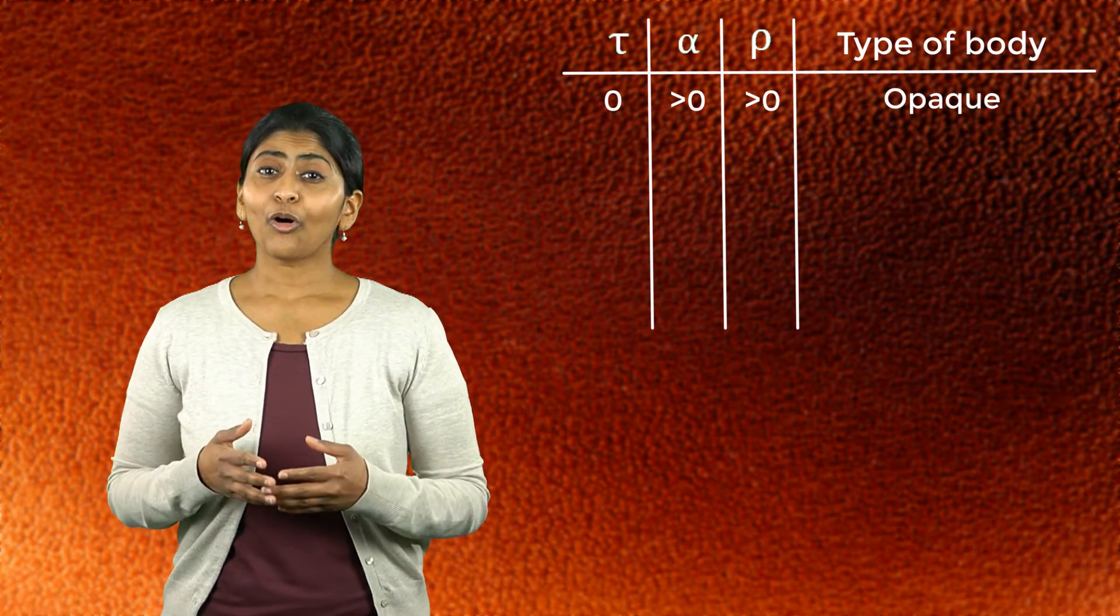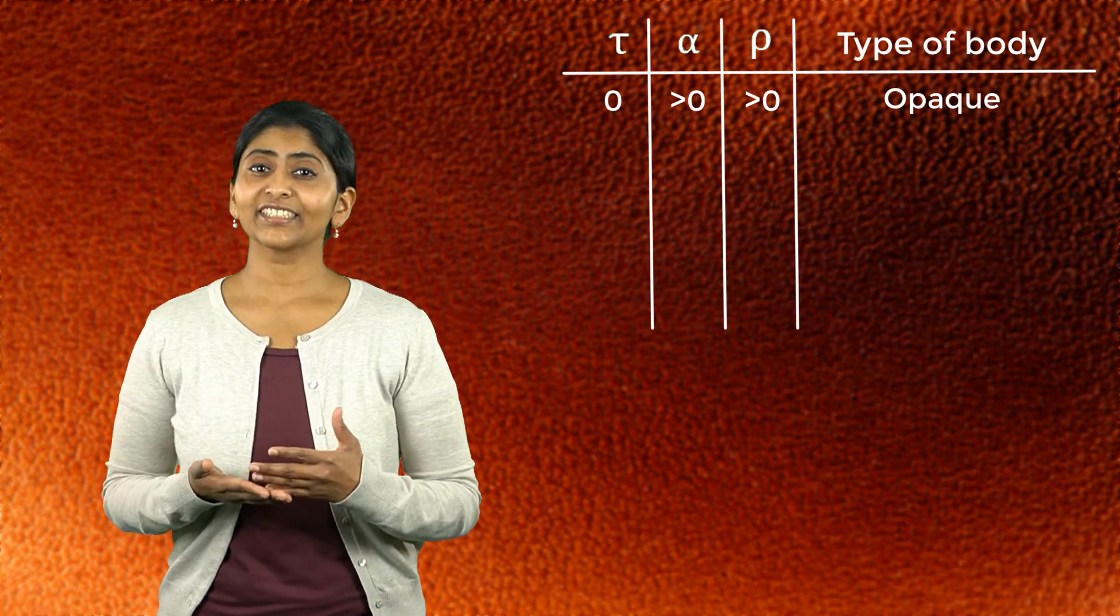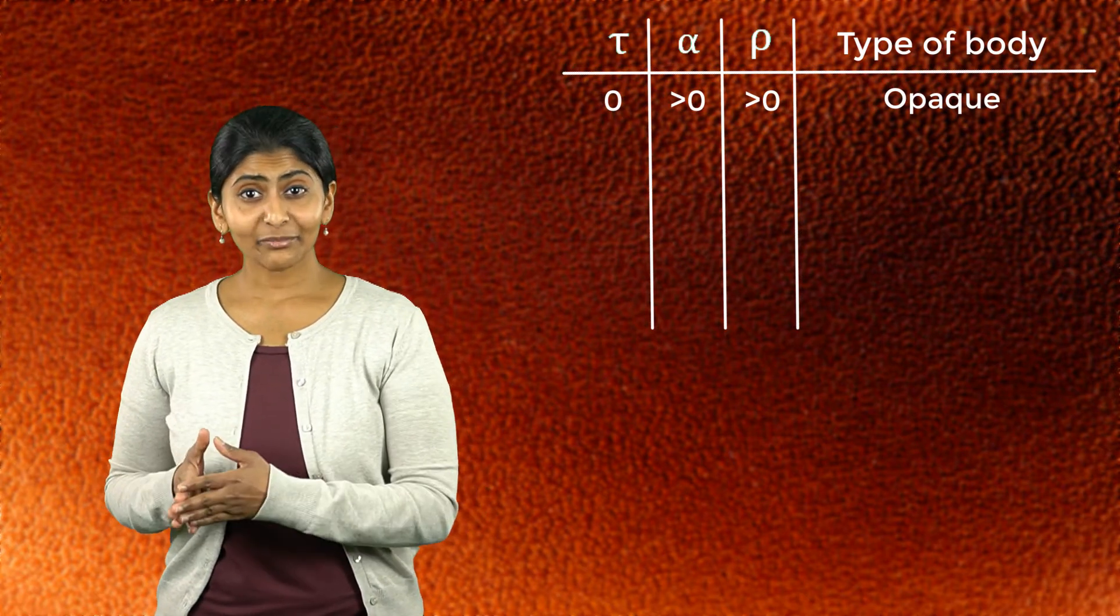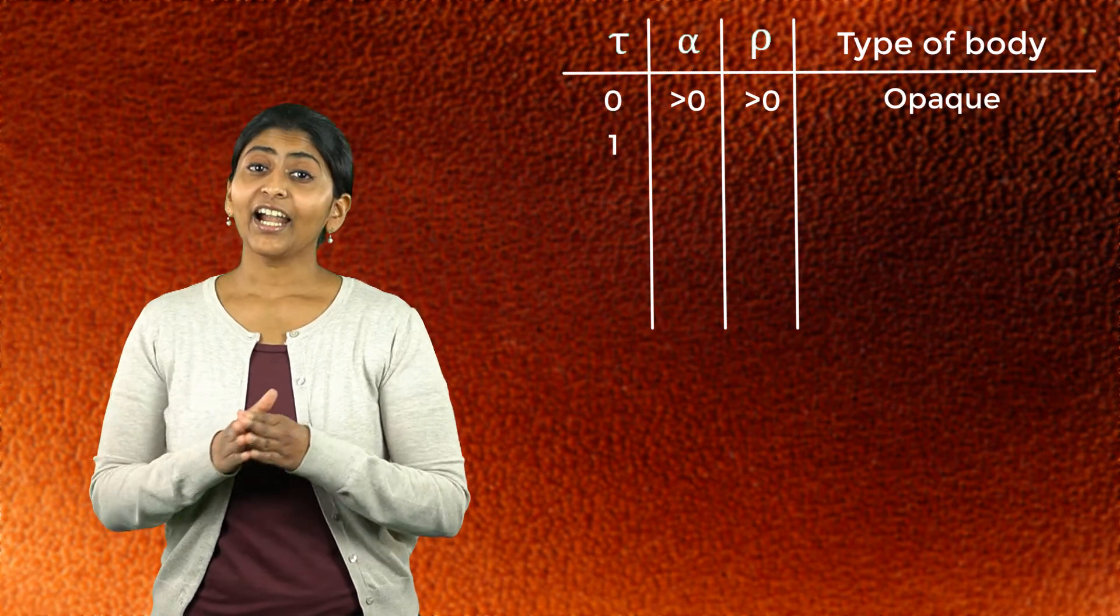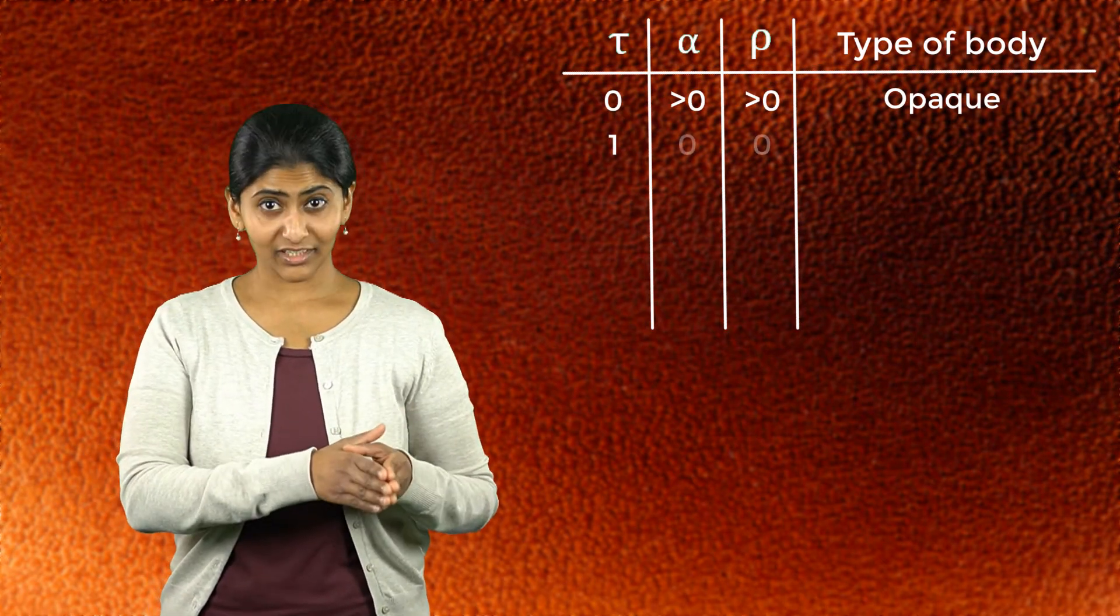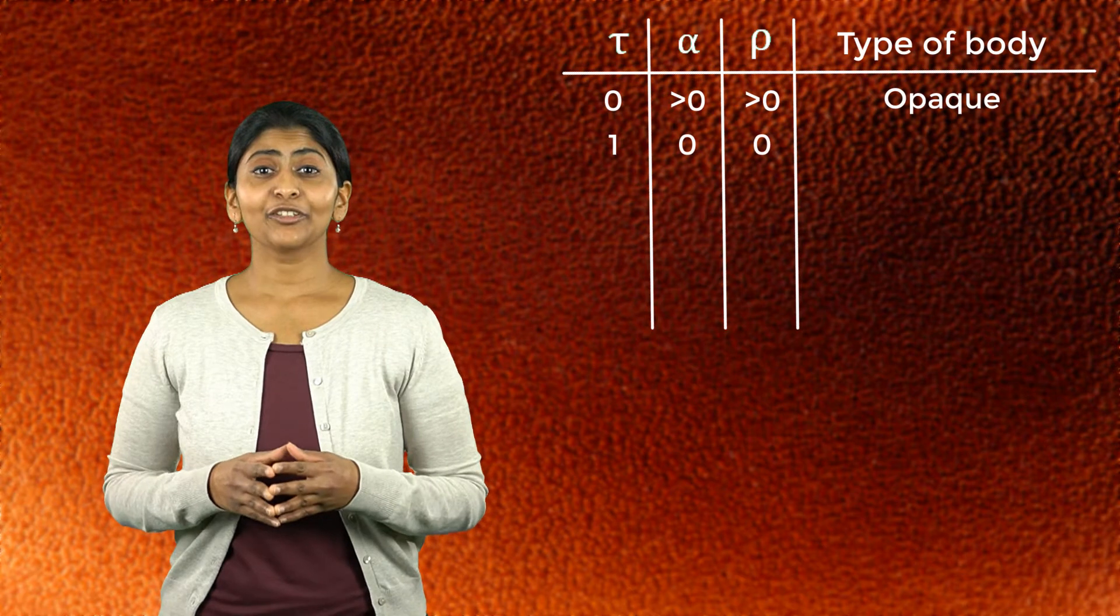Conversely, if a body transmits all the incident radiation, that is when the transmissivity is 1 and the other two components are 0, the body is said to be transparent.